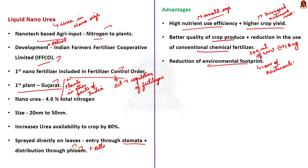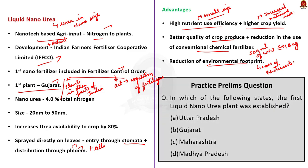The question asks: 'In which of the following states was the first liquid nanourea plant established?' India's first liquid nanourea plant was established in Gujarat, so the correct answer is Option B, Gujarat. Now, let us move on to the next question.